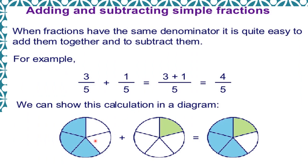In one more example: 3 by 5 plus 1 by 5. We are just adding the numerators — 3 plus 1 equals 4 — so 4 by 5 is the final answer. In the picture representation, 3 parts are shaded out of 5, and we add one more shaded part out of 5, giving 4 parts shaded out of 5 after addition.